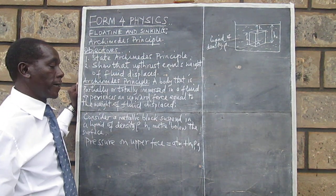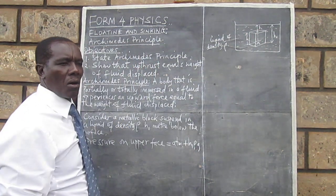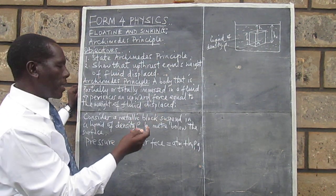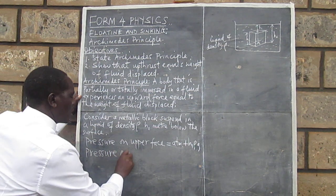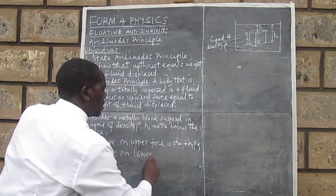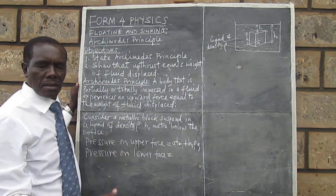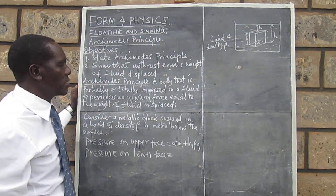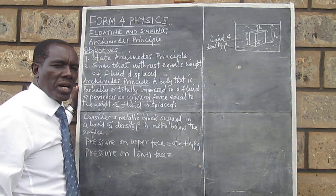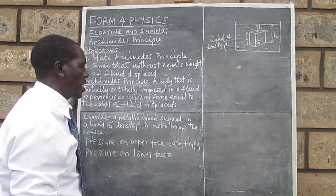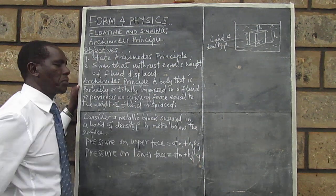We also need to get the pressure on the lower face. We are now at a greater depth, and the pressure on the lower face is going to be atmospheric pressure plus H2·rho·g.